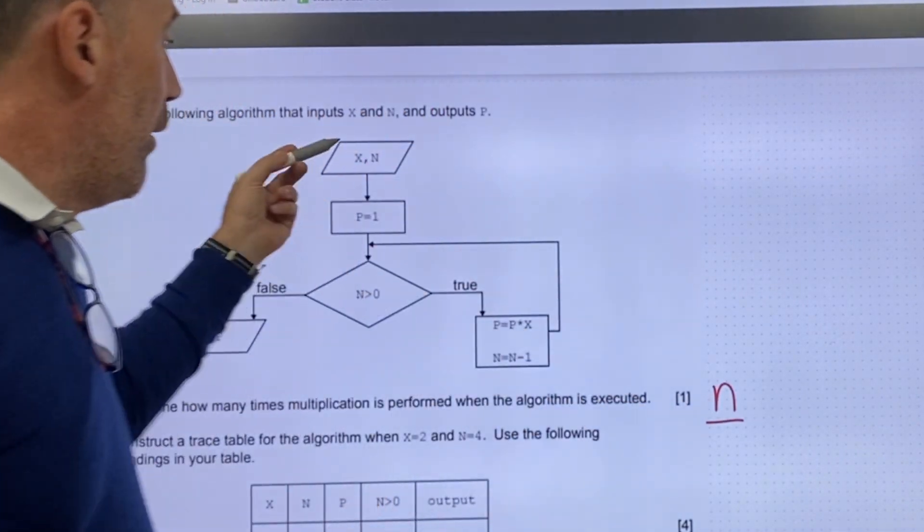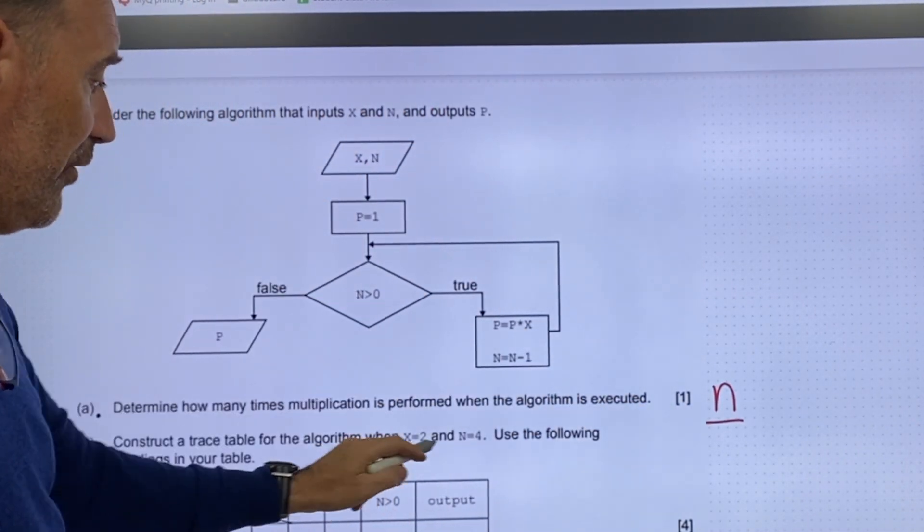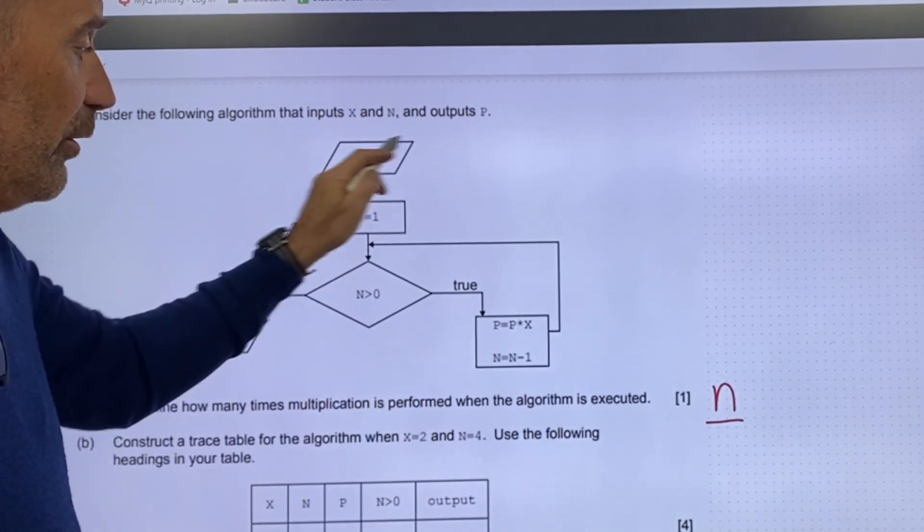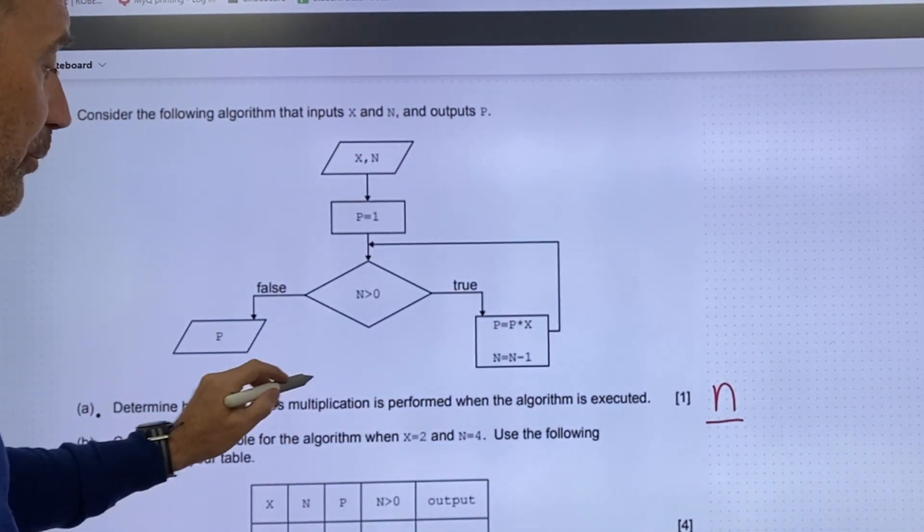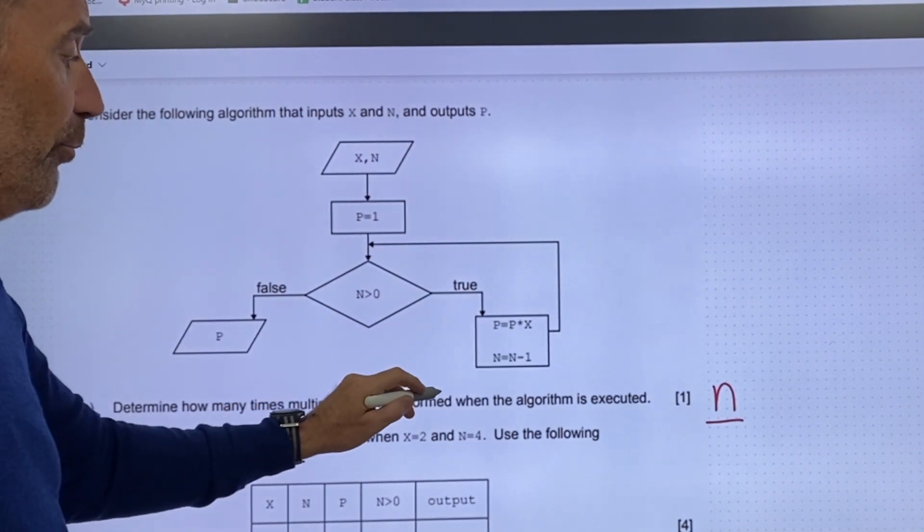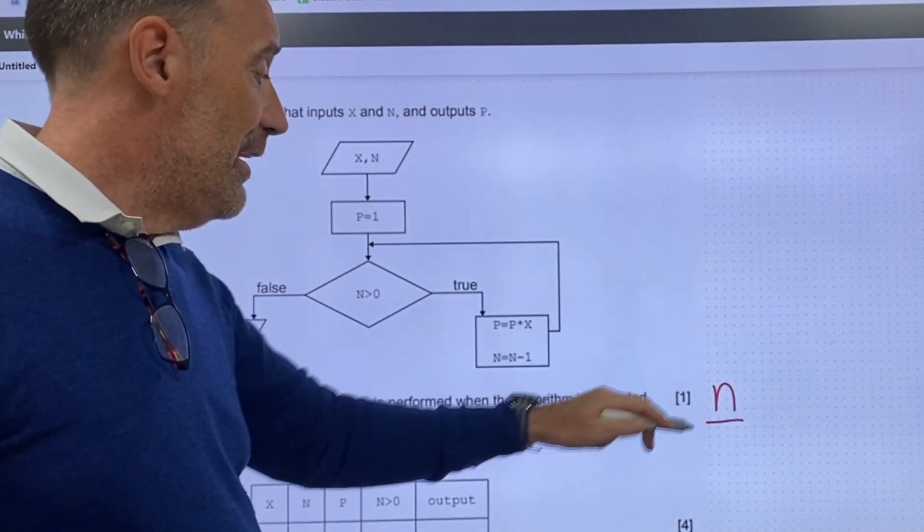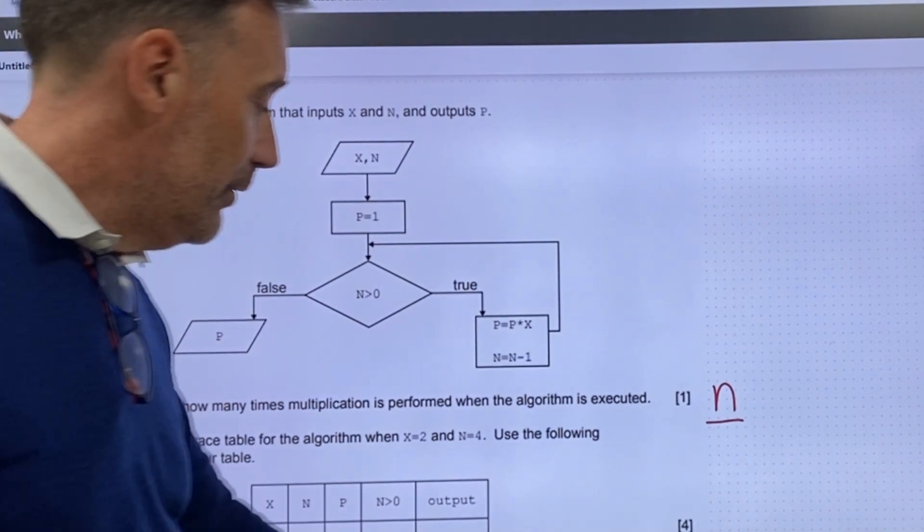When n equals zero, then we will return the output. So the loop stops when n equals zero. Therefore, the multiplication is done n amount of times. Whatever n is, is going to determine how many iterations there are. So the correct answer would be n number of times.